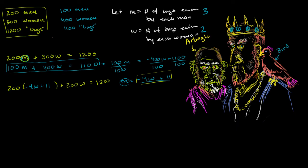But then the bird starts whispering in the king's ear, and the king just progresses to work through the algebra. This is one equation with one unknown now. So the first step would be to distribute the 200. So 200 times negative 4w is negative 800w. 200 times 11 is 2200. And then we have the plus 300w is equal to positive 1200.